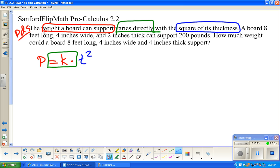It says, a board four feet long. Now, there was nothing in here about length, so we don't care. I'm sorry, a board eight feet long. Eight feet long, four inches wide. There's nothing in here about width. I don't need that. Two inches thick, that I need. Can support 200 pounds. So, what we're going to do, now, so that's two inches thick, and 200 pounds.